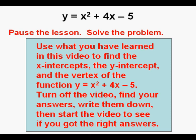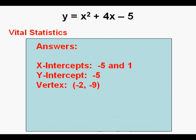Use what you've learned in this video to find the x-intercepts, y-intercept, and vertex of y equals x squared plus 4x minus 5. Turn off the video, find your answers, write them down, then restart to see if you got the right answers. Here are the vital statistics: the x-intercepts are negative 5 and 1, the y-intercept is negative 5, and the vertex is (−2, −9).